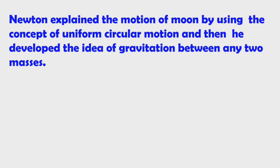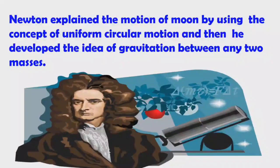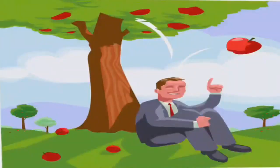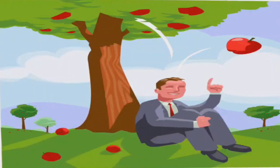Newton explained the motion of the moon using the concept of uniform circular motion, and then developed the idea of gravitation between any two masses. Once upon a time, he sat under an apple tree and observed apple fruits falling toward the earth. He concluded that earth has gravity — an attracting power, that is gravitational force.